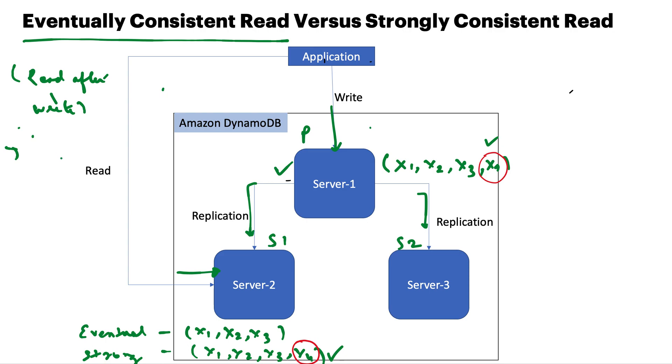means whatever x4 you have written, when you read you get the x4 record as well in your read. In this case, your application has to use an API where you need to ensure that your consistent read parameter is true. So at the API level, you need to ensure that you read or scan data